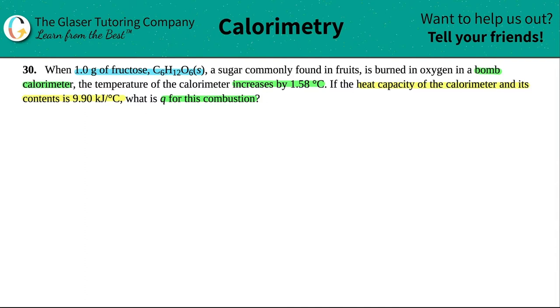Now bomb calorimetry follows different formulas. The first thing is, just make sure, are you using a simple calorimeter? That's q equals ms delta t. But in this case, we have to find out what's going on with this actual bomb calorimeter. The bomb calorimeter formula is even simpler. It's this one.